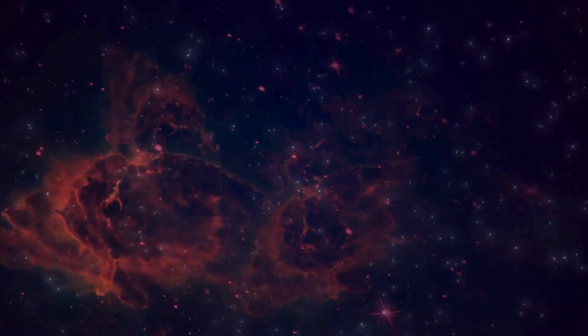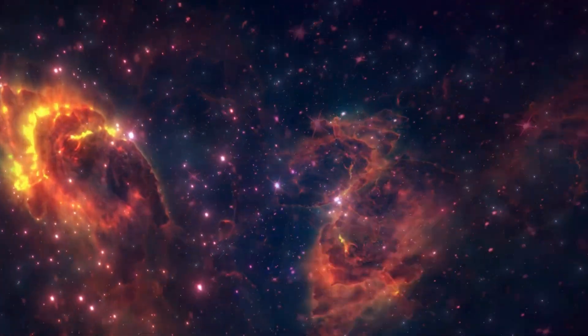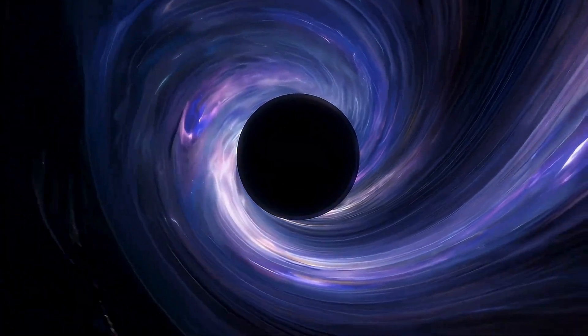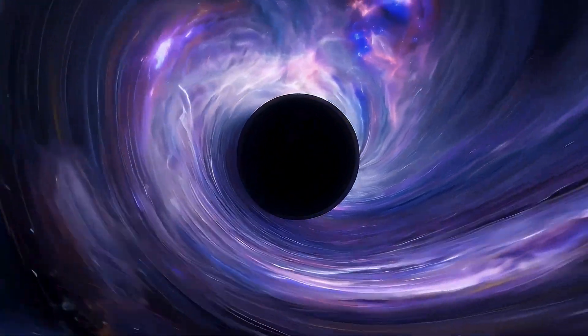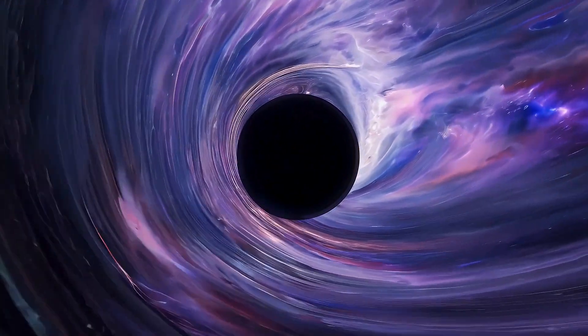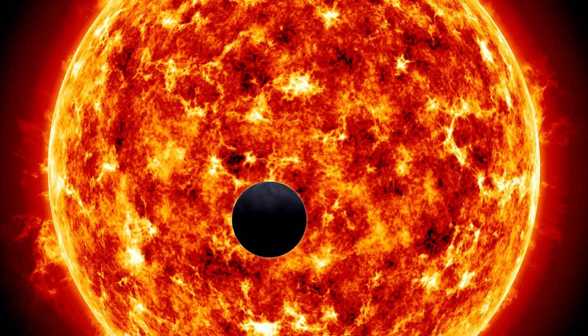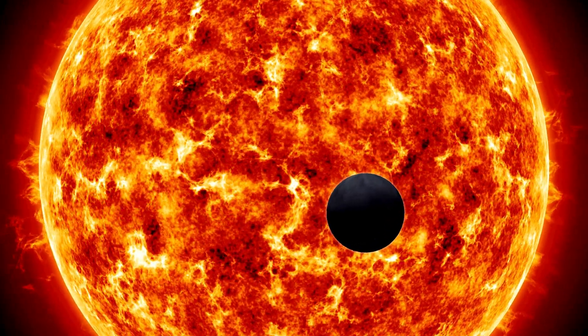Think black holes are all the same size? Think again. Meet TON 618, the most massive black hole we've discovered. It weighs in at a jaw-dropping 66 billion times the mass of our sun. On the opposite end of the spectrum, the lightest known black hole is just 3.8 times the mass of the sun.